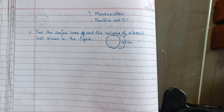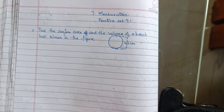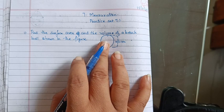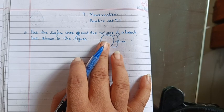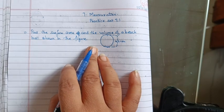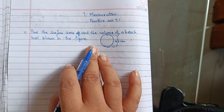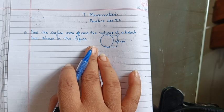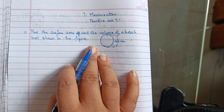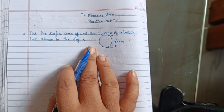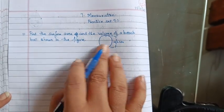As given in the question, you have to find the surface area and the volume of a beach ball shown in the figure. So what do you have to find? Surface area and volume of a beach ball. What is given here? The diameter of the beach ball is given, that is 42 cm.